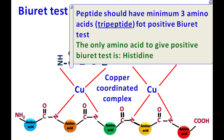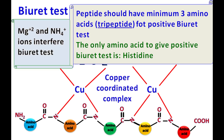A drawback of this test is that magnesium and ammonium ions interfere in the biuret test, so the sample should be free of magnesium and ammonium ions.